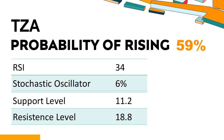Trend Outlook: The probability of TZA share price rising is 59%. When the probability of rising is higher than 50%, it means that the stock has a higher chance of rising. If the probability of rising is lower than 50%, it means that the probability of falling is high. Combining multiple technical analysis indicators, TZA has three bullish signals and four bearish signals. TZA's short-term support level is 13.7. If it falls below 13.7 during the session, it will have a chance to test 11.2.